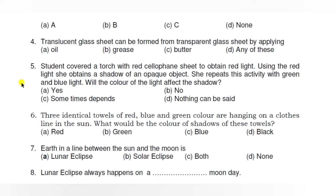Question number 5: A student covered a torch with a red cellophane to obtain red light. Using the red light, she obtains a shadow of an opaque object, then repeats the activity with green and blue light. Will the color of the light affect the shadow? The answer is no — the shadow does not depend on the color of the light. Whether you have red, green, or any other colored light incident on the object, the shadow remains dark.